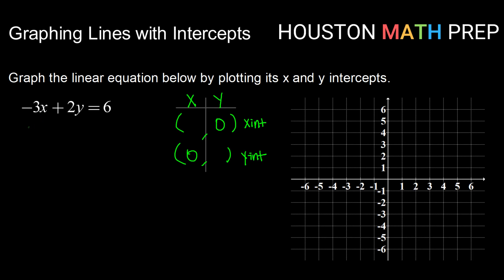So over into our equation, replacing y with zero, we get negative 3x plus 2 times zero equals 6. So negative 3x equals 6. Dividing both sides by negative 3, I get x equals negative 2, filling in my x-intercept. So the graph of this line crosses through the x-axis at the point negative 2, zero, right there.